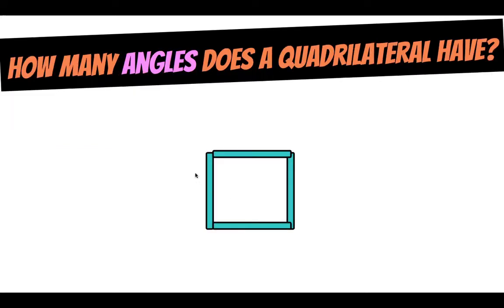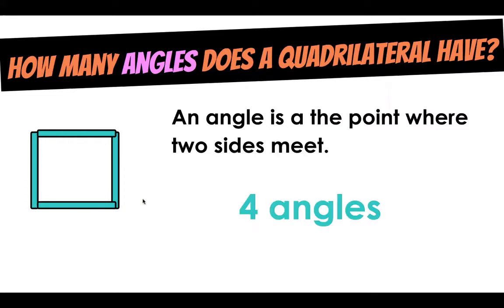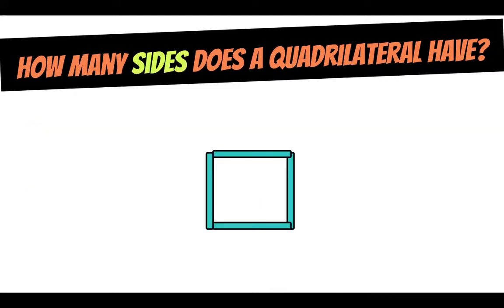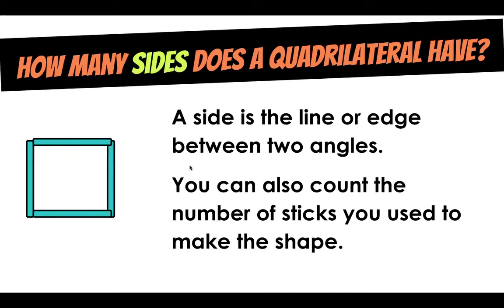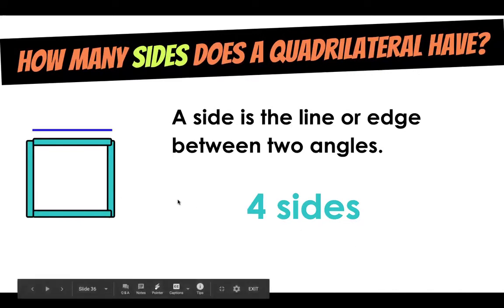So first, how many angles does a quadrilateral have? Remember, an angle is the point where two sides or sticks meet. How many do you think? Four angles. One, two, three, four. Now, how many sides does a quadrilateral have? Well, remember, a side is the line or edge between two angles. You can also count the number of sticks you use to make the shape. How many sticks did you use? Four sides. We have one, two, three, four sides.